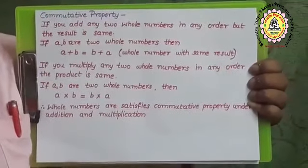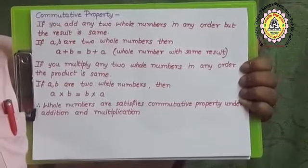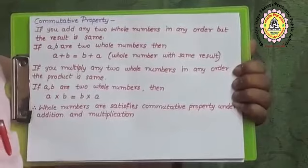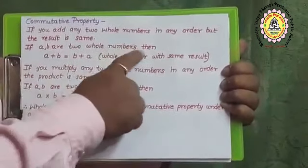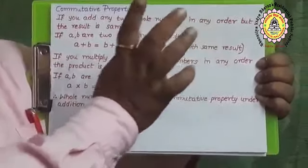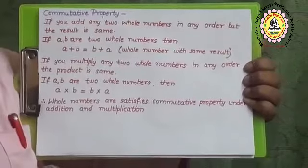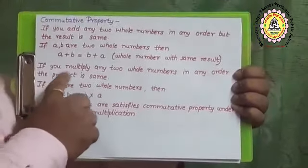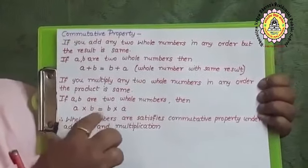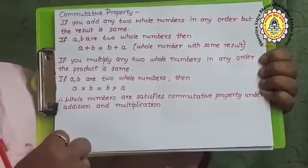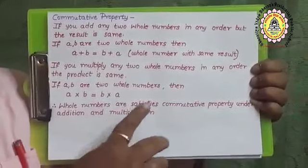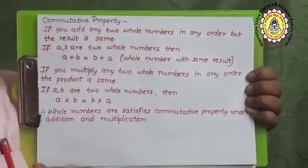Commutative property of whole numbers under addition and multiplication: if a and b are two whole numbers, then a plus b equals b plus a. If you add any two whole numbers in any order, the result is the same, so whole numbers satisfy commutative property under addition. For multiplication, a into b equals b into a. For example, 2 into 3 equals 6 and 3 into 2 also equals 6. The product is the same. Therefore whole numbers satisfy commutative property under addition and multiplication.